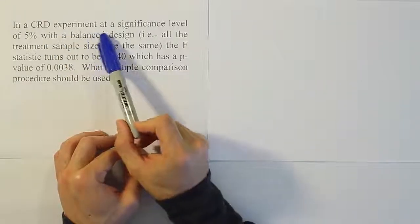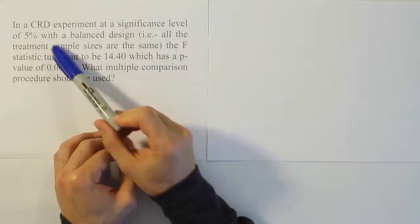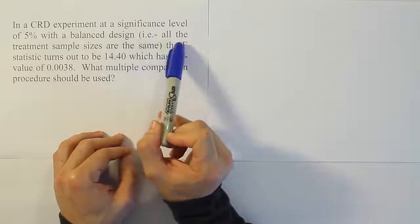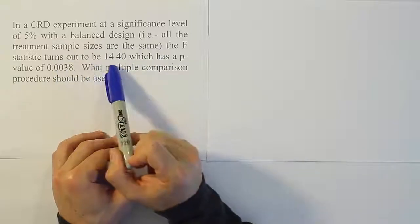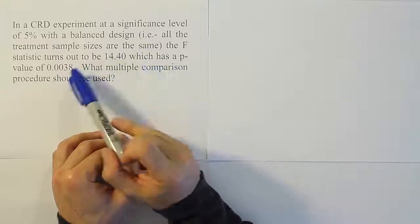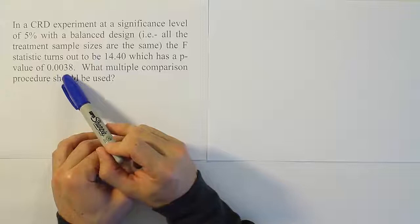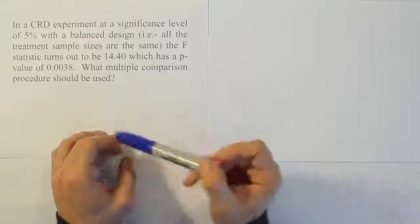In a completely randomized design experiment at a significance level of 5% with a balanced design, in other words, all the treatment sample sizes are the same, the F statistic turns out to be 14.40, which has a p-value of 0.0038. What multiple comparison procedure should be used?